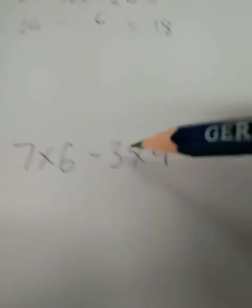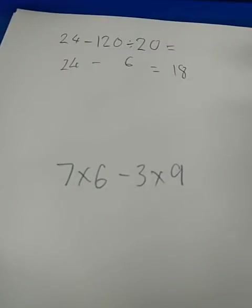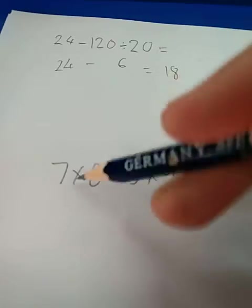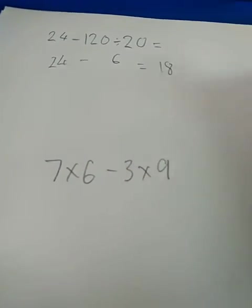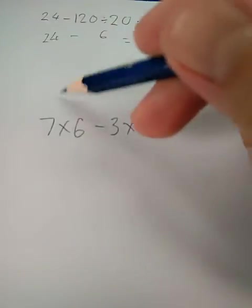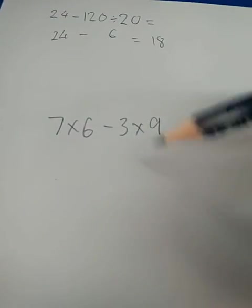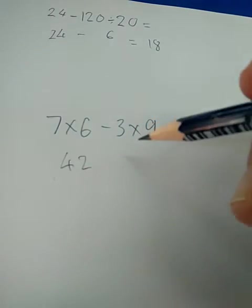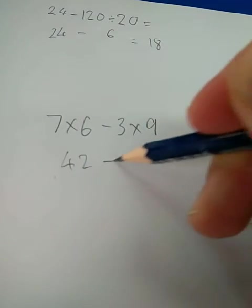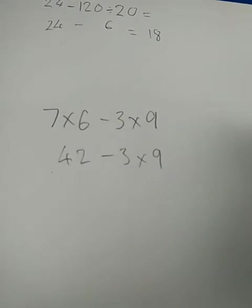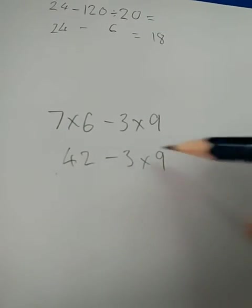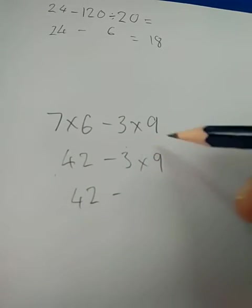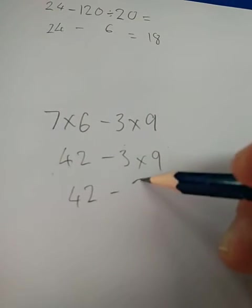We've got multiplication. In fact we've got two bits of multiplication. So if they are happening at the same time we have to do both of them before our minus and we do them from left to right. So 7 times 6 is 42. So it would be 42 minus 3 times 9. Then I'm going to do the multiplication on this side. So 42 minus 3 times 9 equals 27.